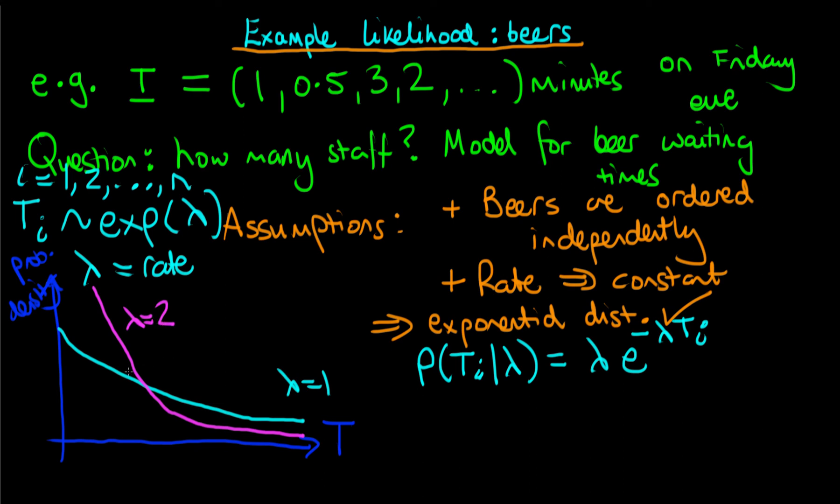The reason it's shifted to the left is because if more beers are being ordered per unit time, then the waiting time between beers being ordered is smaller on average. And obviously if you went the other way and we decreased the value of lambda, then we might obtain a distribution that looks something like this yellow line here, and that might be, for example, the case where lambda is equal to a half.